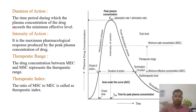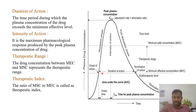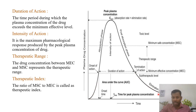Next point is duration of action: this is the time period for which drug concentration is above MEC level. Below MEC there will not be any drug action. Once the drug concentration reaches the MEC level, from that point drug action will start. From this time to this point, drug concentration is above MEC — here it is below MEC. Only from this point to this point is the drug concentration above MEC level, so this will be called duration of action.